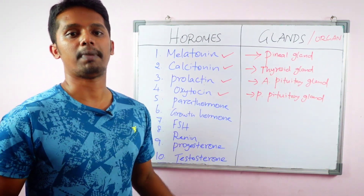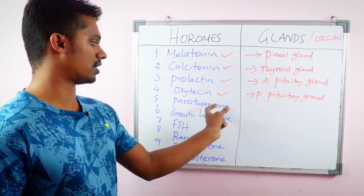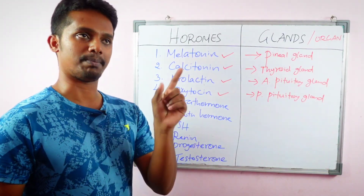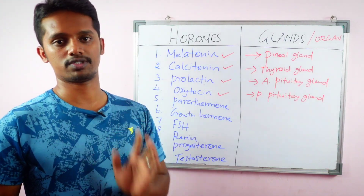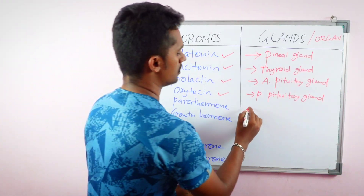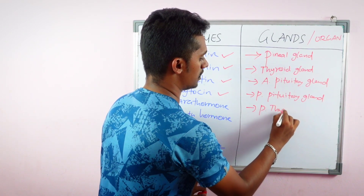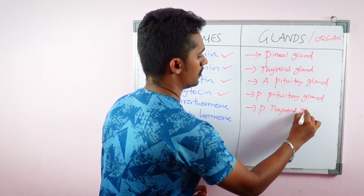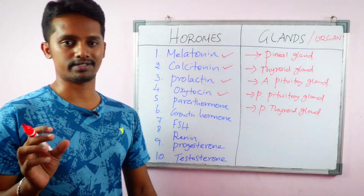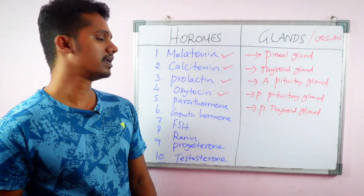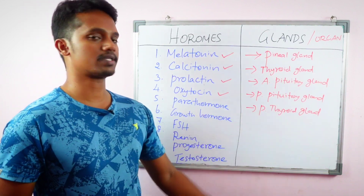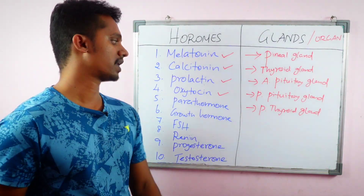The fifth hormone is Parathormone. The name 'para' hints at the same gland — it is produced by the Parathyroid gland. It is also known as PTH (Parathyroid Hormone). Important to note: it is the Parathyroid gland, not the Thyroid gland.